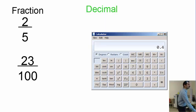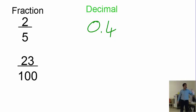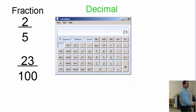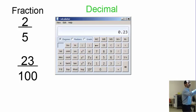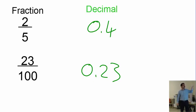Two divided by five gives us 0.4 — that's a decimal number, and that's the answer. Next, what's the decimal for the fraction 23 divided by 100? Let's calculate: 23 divided by 100 equals 0.23. That is how you change a fraction into a decimal number.